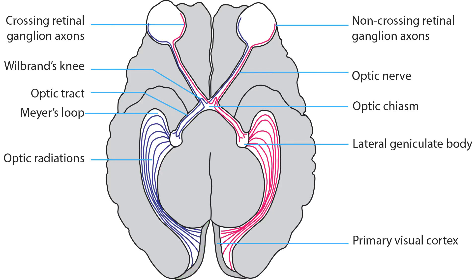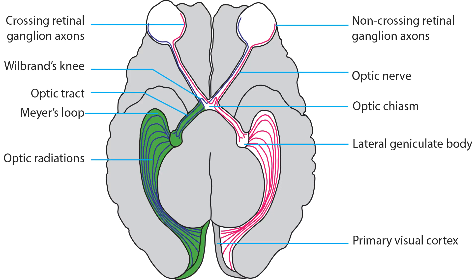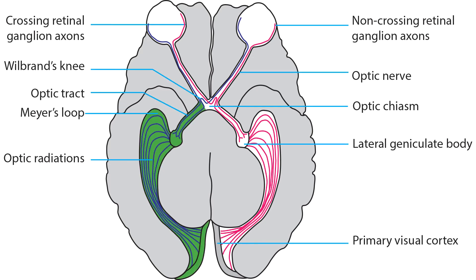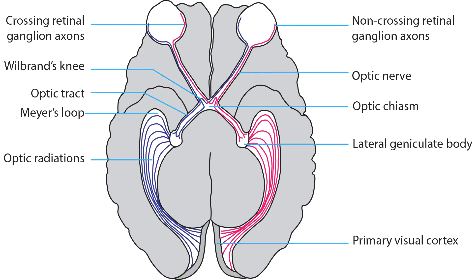As they leave the optic chiasm, retinal ganglion cell axons enter the optic tracts, synapse mainly on the lateral geniculate body, and travel through the optic radiations to primary visual cortex.